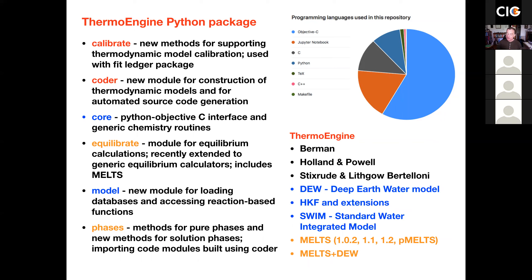Enki currently also contains the DEW — the Deep Earth Water model — which is a model of aqueous fluids up to pressures of about 8 or 10 GPa. It contains the Helgeson-Kirkham-Flowers extension aqueous ion and complex model for water-rock interaction at crustal temperatures and pressures. Enki also contains SWIM, our new Standard Water Integrated Model that calculates the properties of water over the entire pressure-temperature range of application for the Earth. And it also contains MELTS in all its varieties, and our new combined MELTS plus DEW model that allows you to look at the partitioning of aqueous fluids from magmatic systems and vice versa.